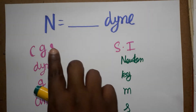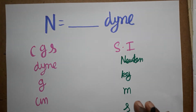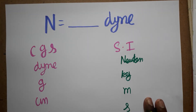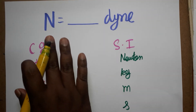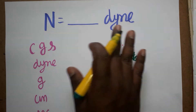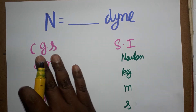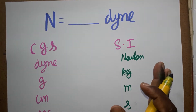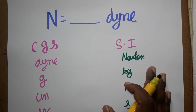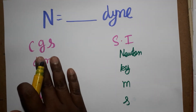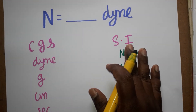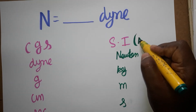Today we are going to learn how to convert from Newton to Dyne using the dimensional analysis concept. This is for Class 11. We will use the CGS system and the SI system for this conversion.